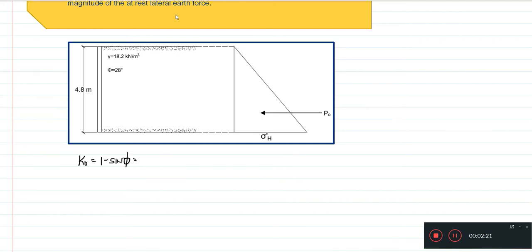So that will be equivalent to 1 minus sine of 28 degrees. So our at rest earth pressure coefficient will be equivalent to a value 0.5305.